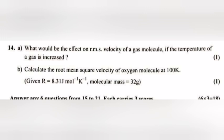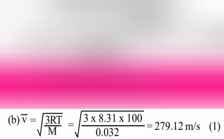Question 14b: Calculate the root mean square velocity of oxygen molecule at 100K. Answer: V is equal to root of 3RT by M is equal to root of 3 into 8.31 into 100 divided by 0.032 equal to 79.12 meter per second.